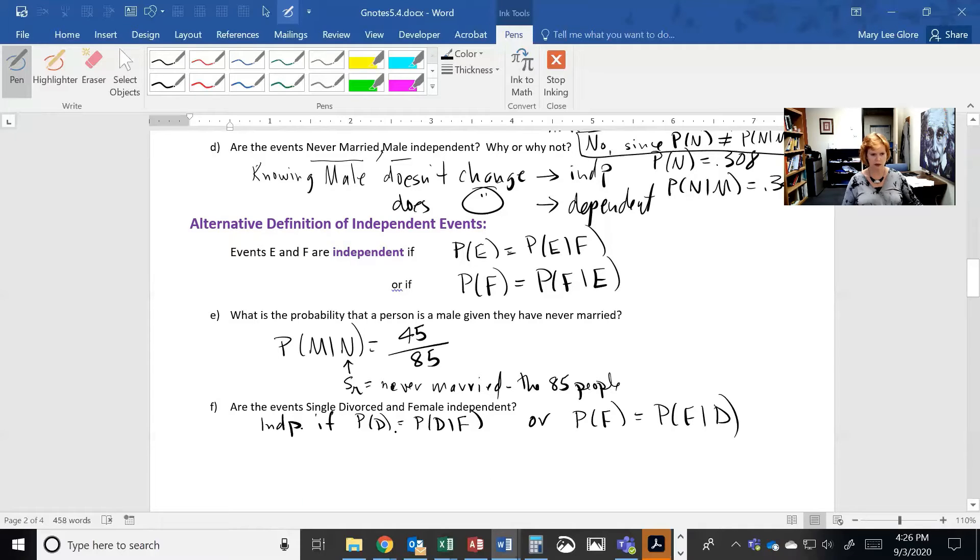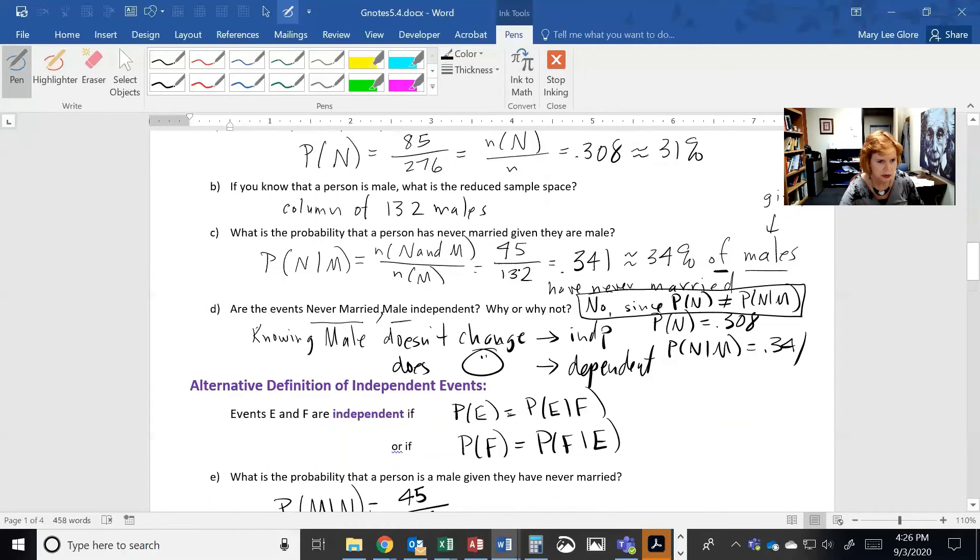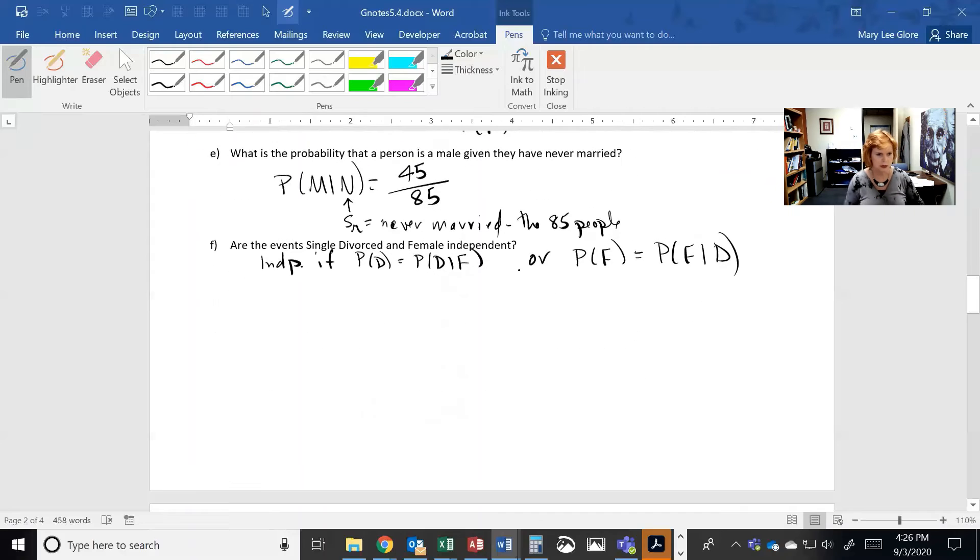All right, so I'm going to work on this one. Let's find what is the probability of divorced. So I look, divorced is this row. There's 23 divorced people total out of 276 total, and this is equal to 0.0833. It's actually like goes on forever.